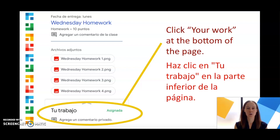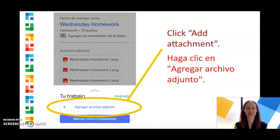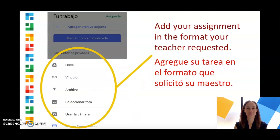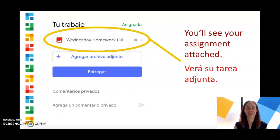Click Your Work at the bottom of the page and click Add Attachment. Add your assignment in the format your teacher requested, and then you'll see your assignment attached.